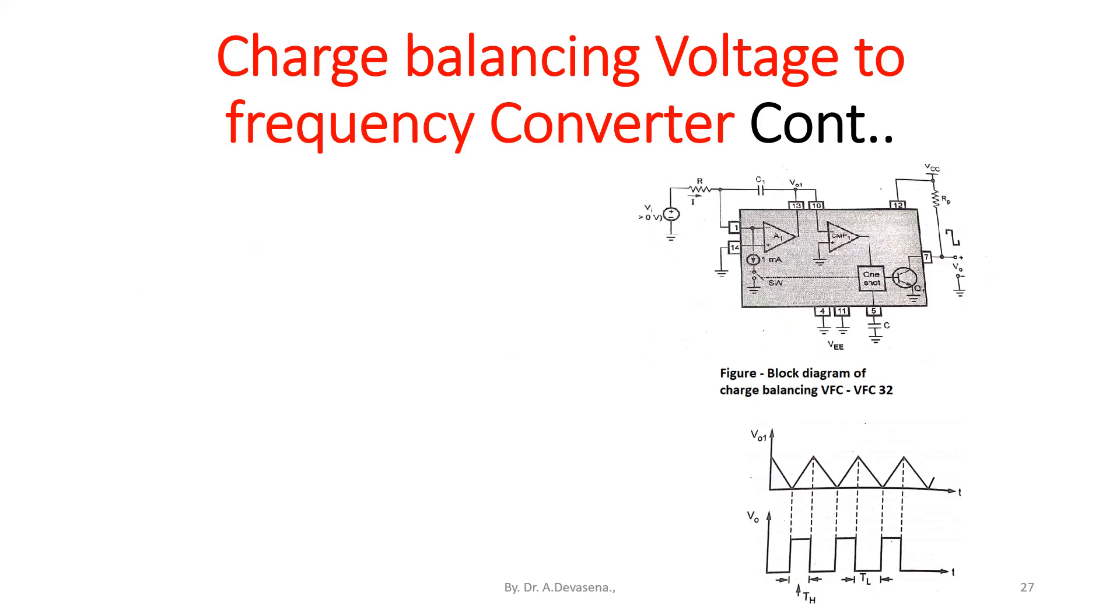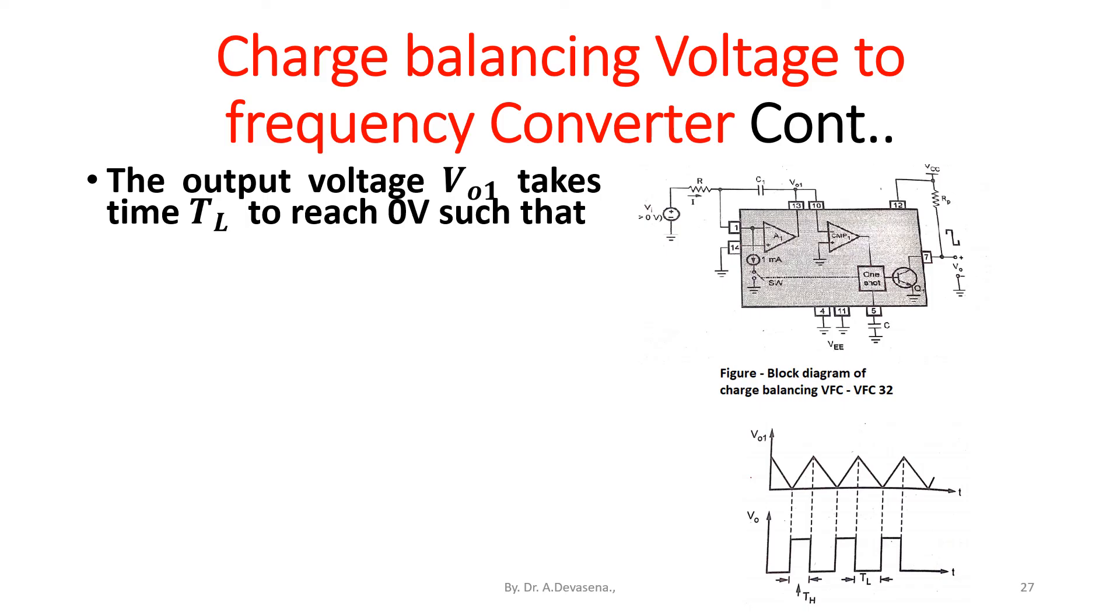The output voltage V_o1 takes time T_L to reach 0V such that delta V_o1 equals I times T_L divided by C1. Then the output frequency f_out equals 1 divided by T_H plus T_L.